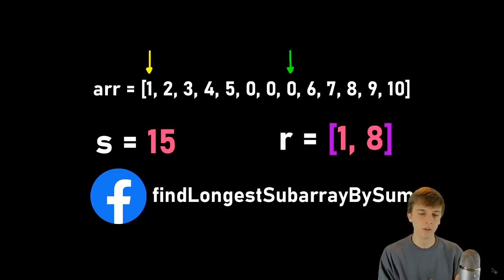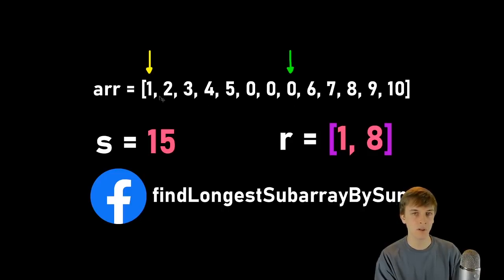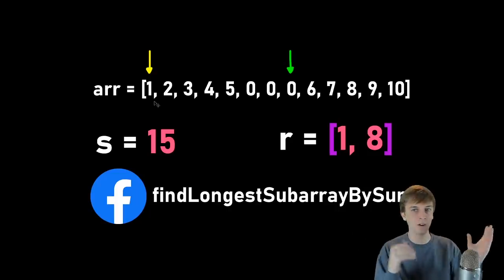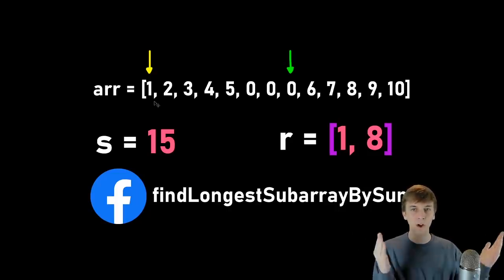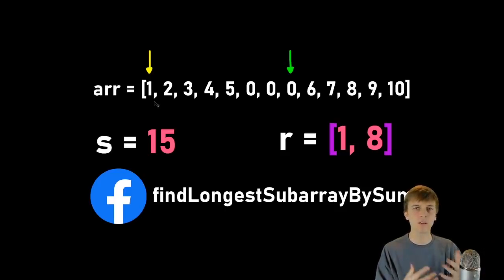Here's the same example padded with some zeros: one, two, three, four, five, zero, zero, zero — we're still looking for 15. If we take the subarray from yellow to green, it still adds up to 15. Padding with zeros just expands the longest subarray. The longest one is what we want, so let's think of some algorithms and how we can solve this with time efficiency.